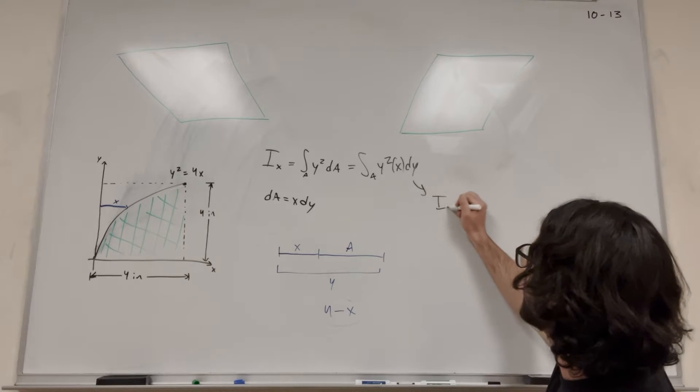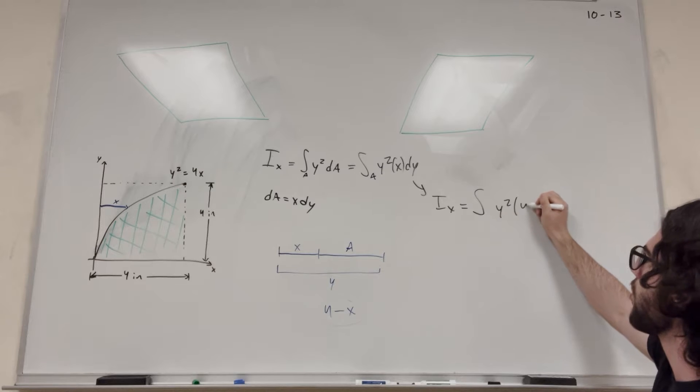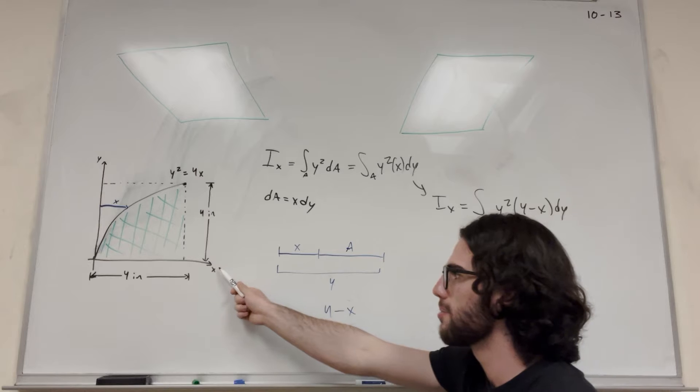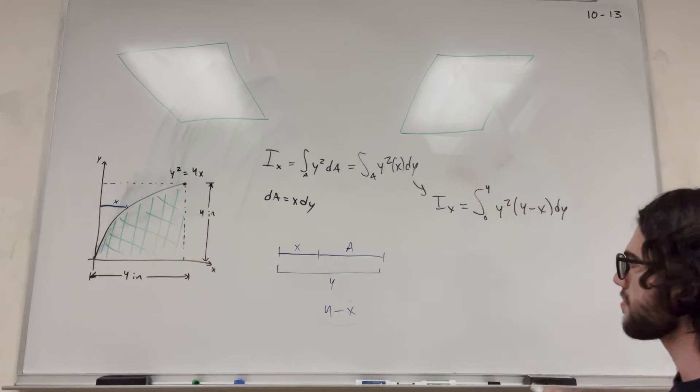So going over here, I have Ix equals the integral of y squared times 4 minus x dy. And what are our bounds for dy? Well, dy goes from 0 to 4, so we can just put in 0 to 4 on the integral. So there we go.